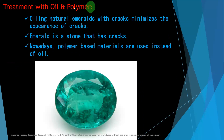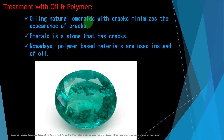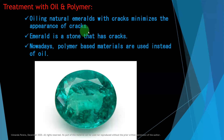Next is treatment with oil and polymer. We use this for emeralds. Natural emeralds have a lot of inclusions, natural inclusions, and cracks, so we have to cover the cracks using oil or polymer. Oiling natural emeralds with cracks minimizes the appearance of those cracks.